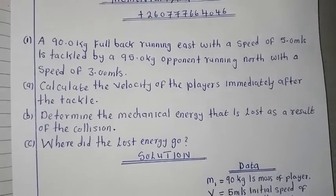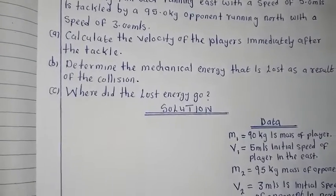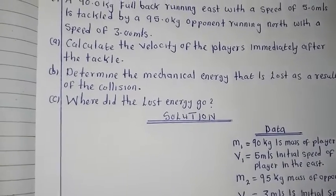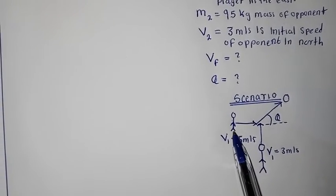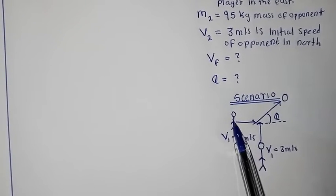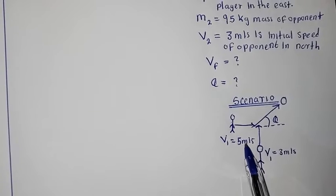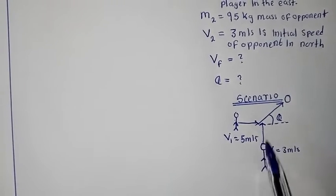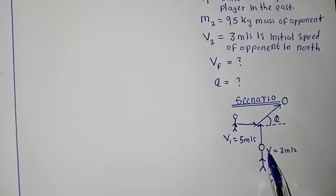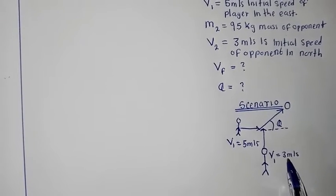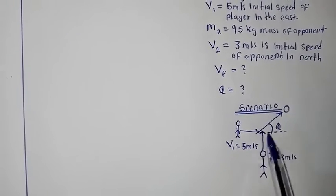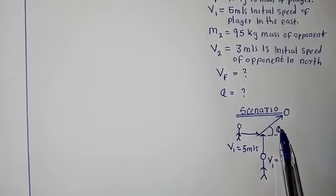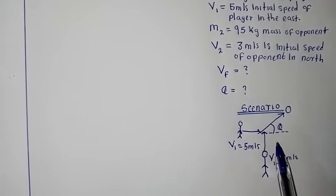Let's imagine this is a football pitch where footballers are playing football. You have this opponent here moving in this direction — heading north at 5 meters per second — and they encounter a person of 95 kg moving at 3 meters per second. They meet at a point, and you discover that after the tackle the resultant velocity makes an angle in the north-east direction.